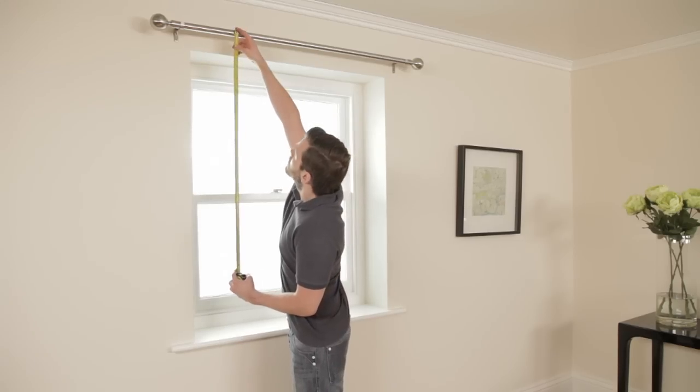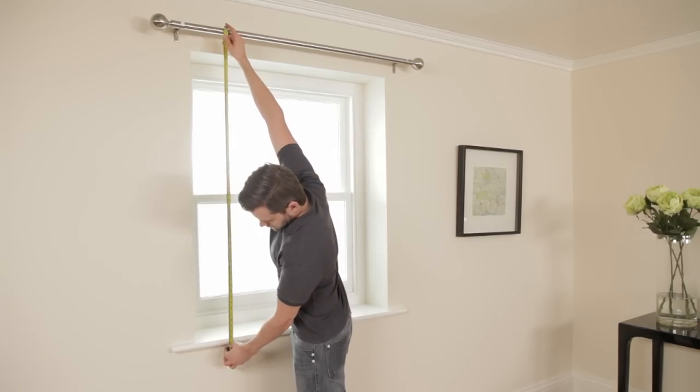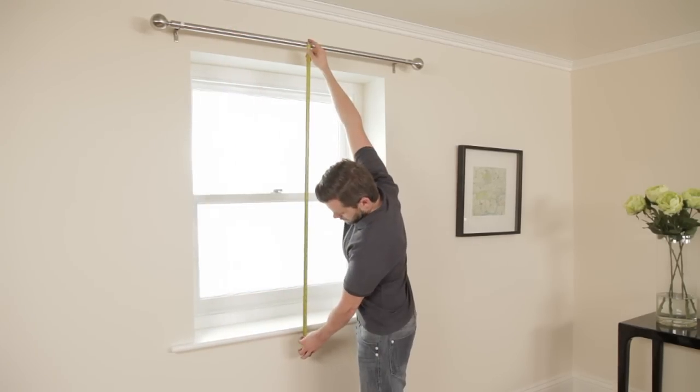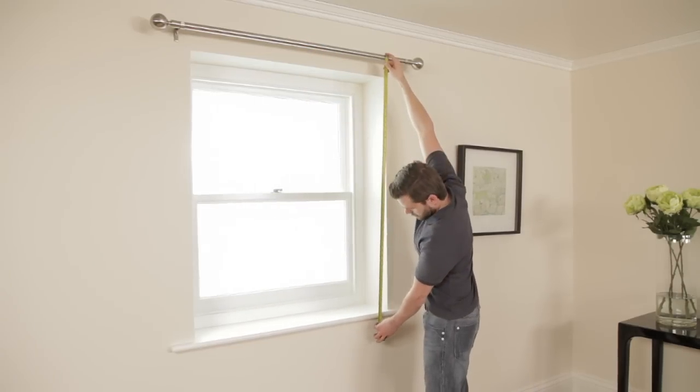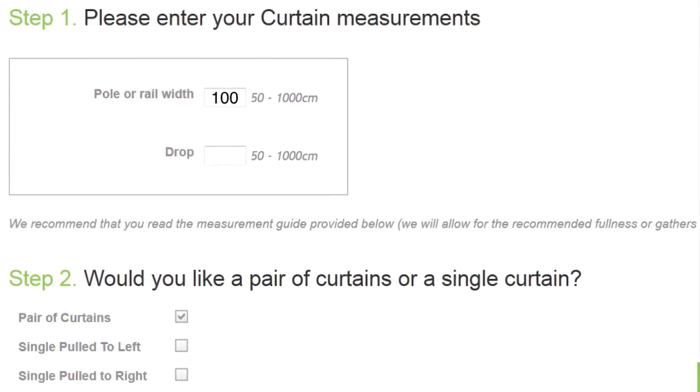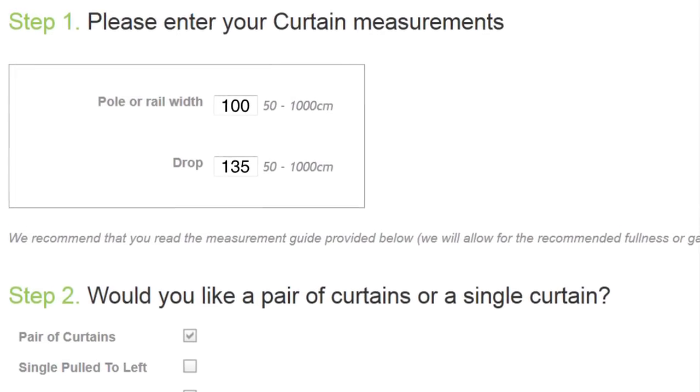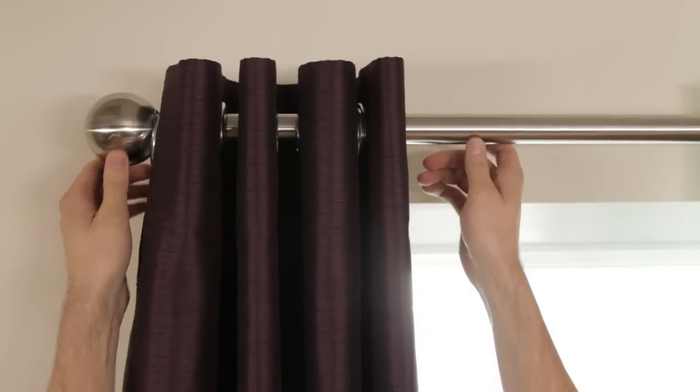For eyelet curtains, measure from the top of the pole and take three measurements, again because the window sill may not be completely level. Choose the smallest measurement, which you'll now enter into our site once you've chosen a style and pattern to complement your home.